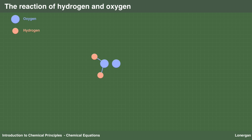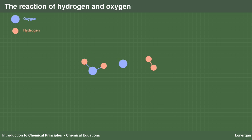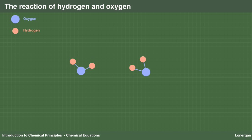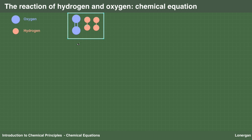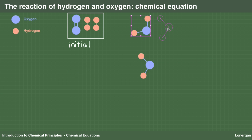In this case, one molecule of hydrogen can react with oxygen to form one molecule of water. But there is an oxygen atom left over. This can, in turn, react with another molecule of hydrogen to form another molecule of water. Overall, we initially had one molecule of oxygen and two molecules of hydrogen. These reacted to form two water molecules, our final state.